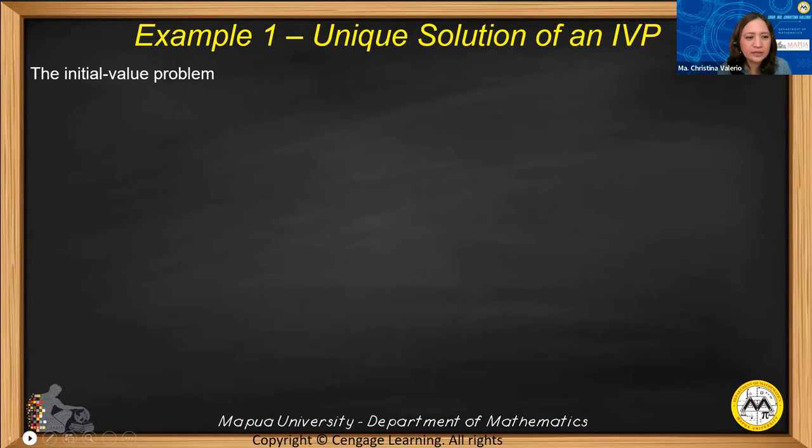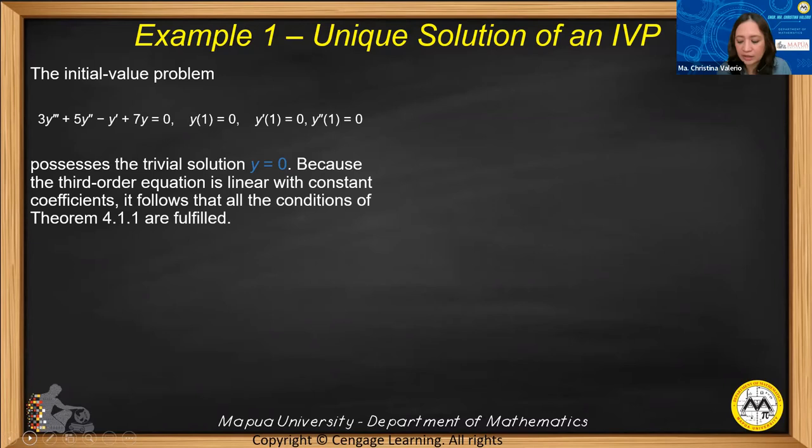For example, the initial value problem: 3y''' + 5y'' - y' + 7y = 0, subject to the conditions y(1) = 0, y'(1) = 0, and y''(1) = 0, possesses the trivial solution y = 0.